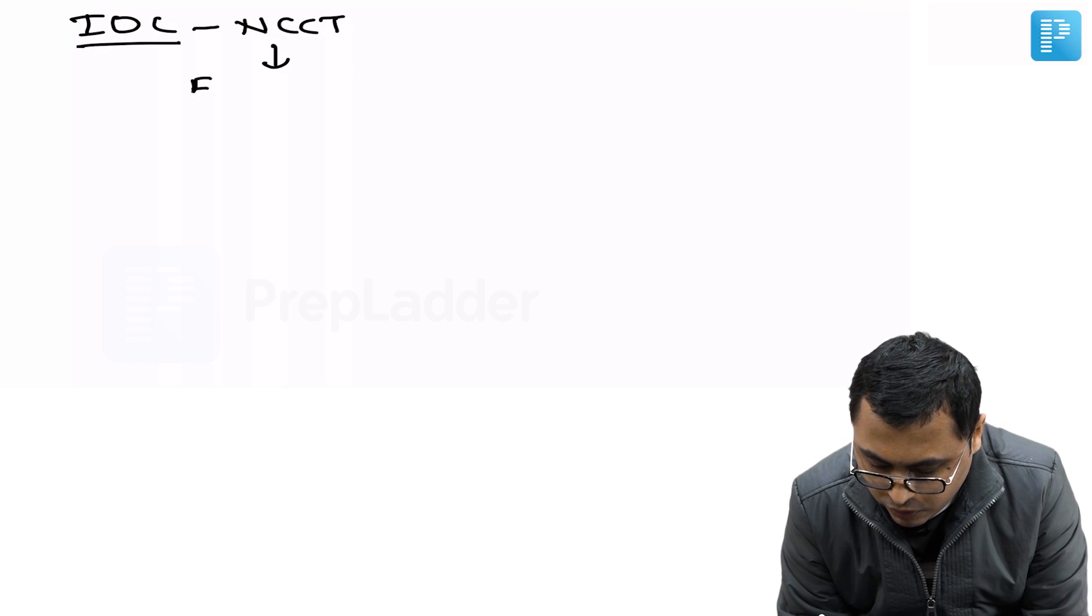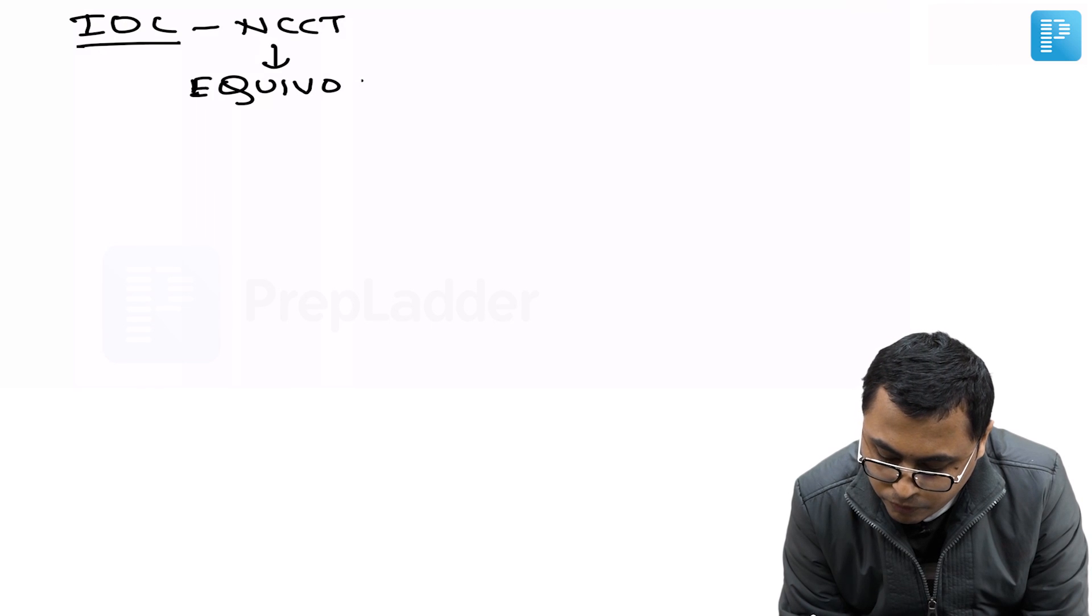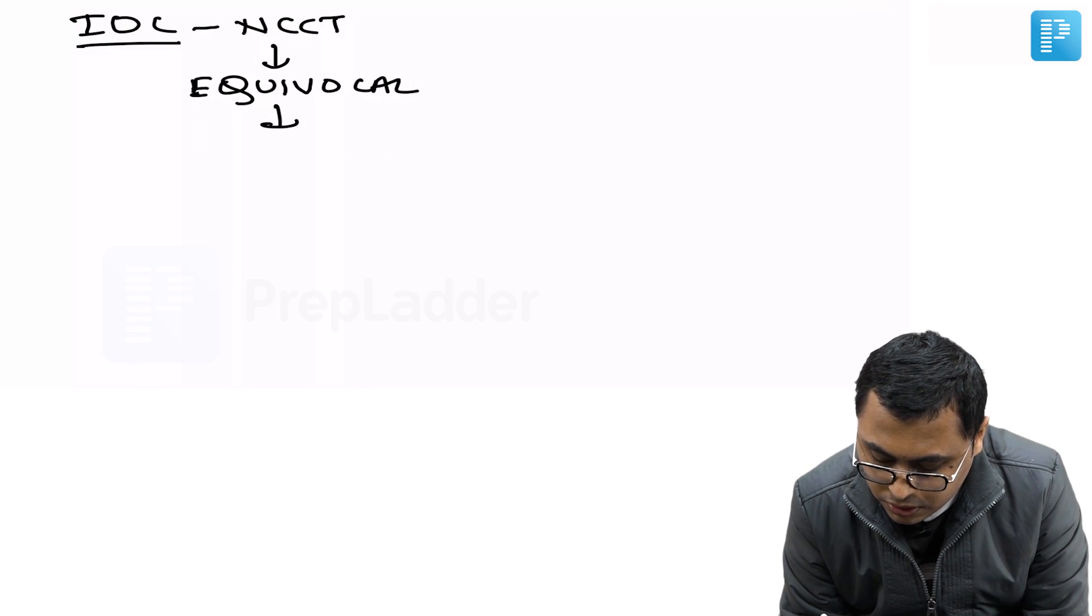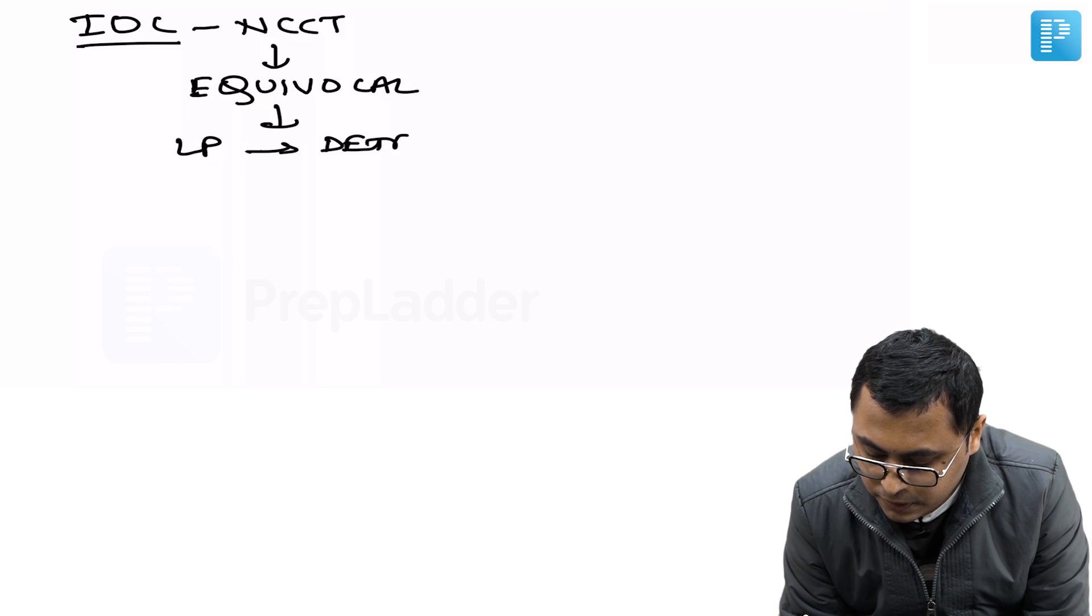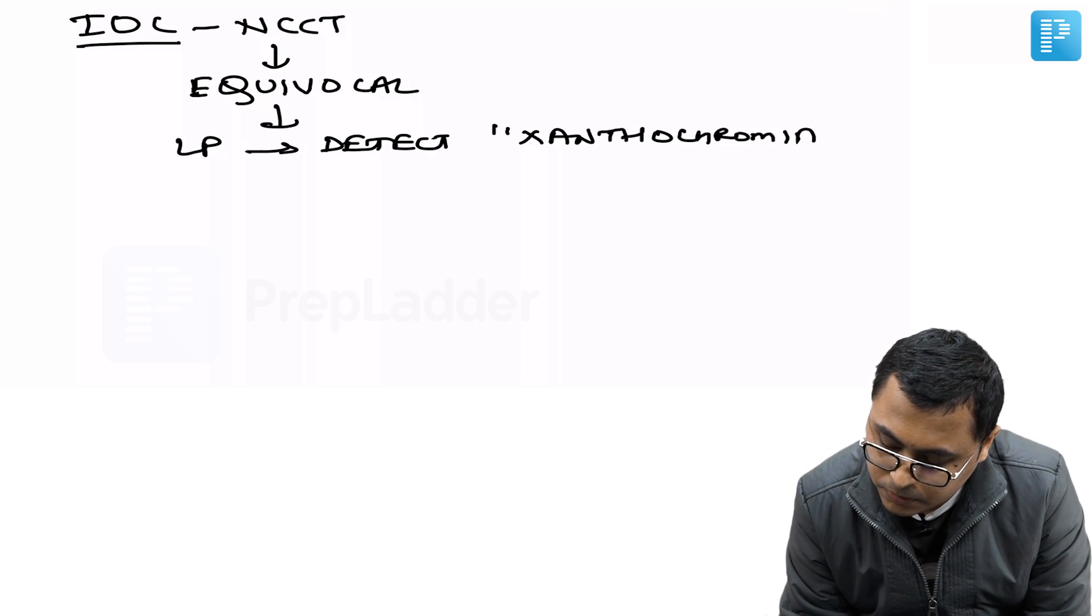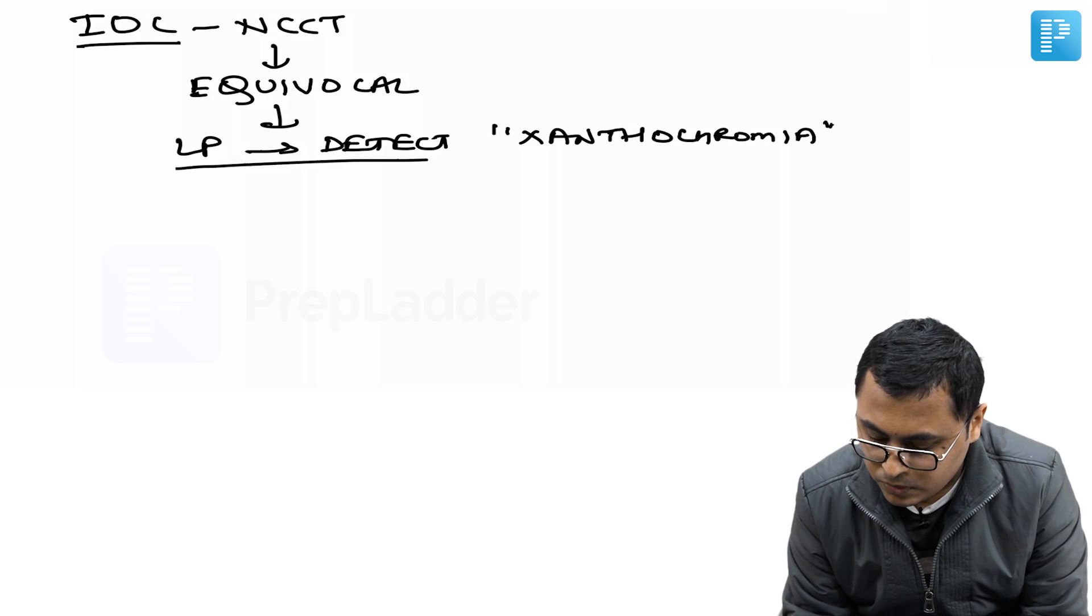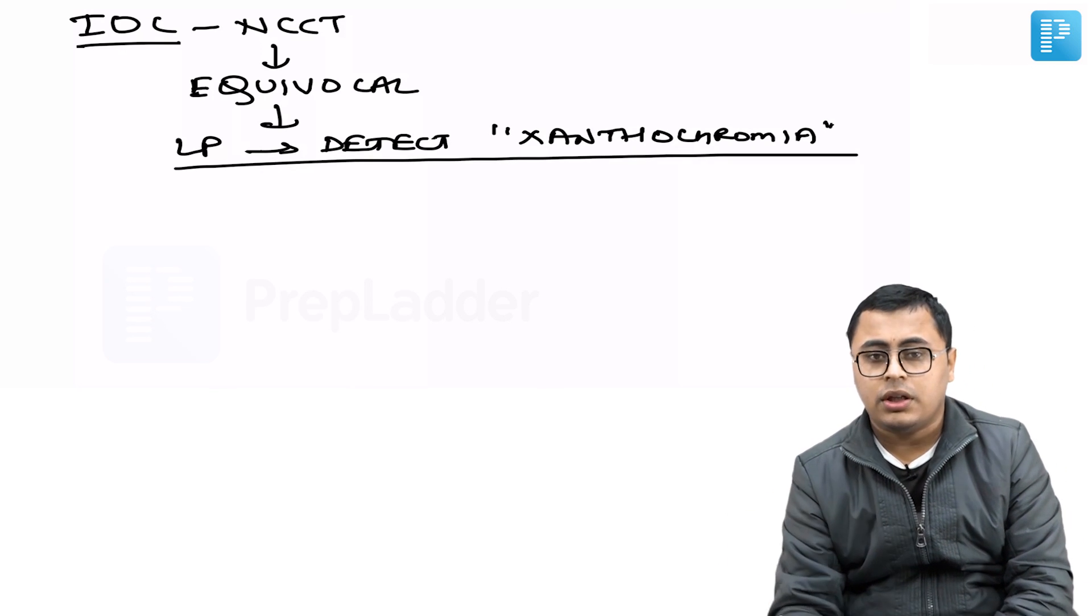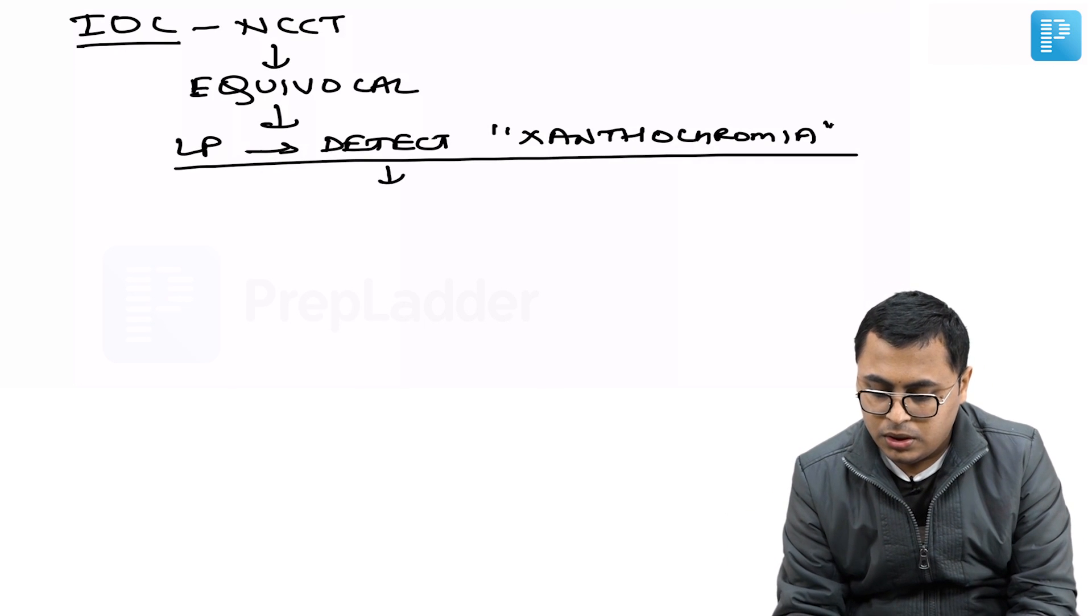If non-contrast CT is equivocal, then a lumbar puncture to detect xanthochromia can be used for confirmation.